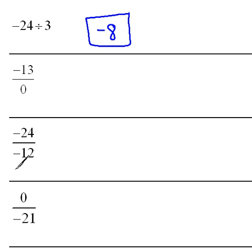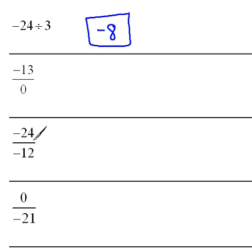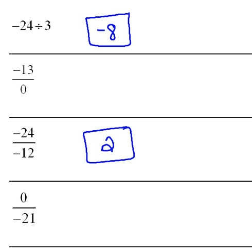I want to skip to the third example, which is a little closer to the first one. A fraction is just a compact way of writing a division problem. So even though it doesn't have the division symbol, negative 24 over negative 12 literally means negative 24 divided by negative 12. Looking at the numbers first, 24 divided by 12 is 2. Both signs are the same, so the answer is automatically positive — we just write 2.